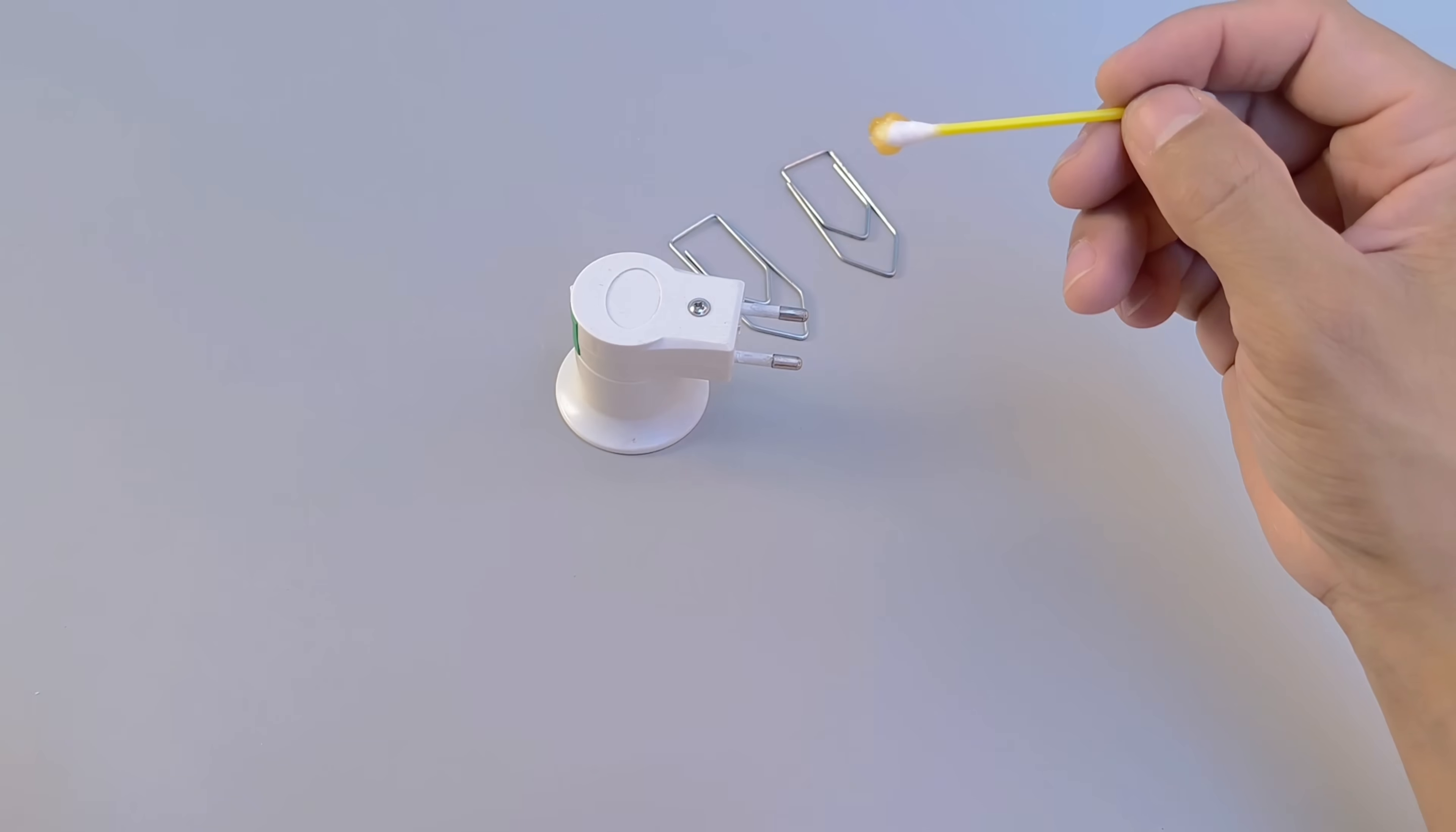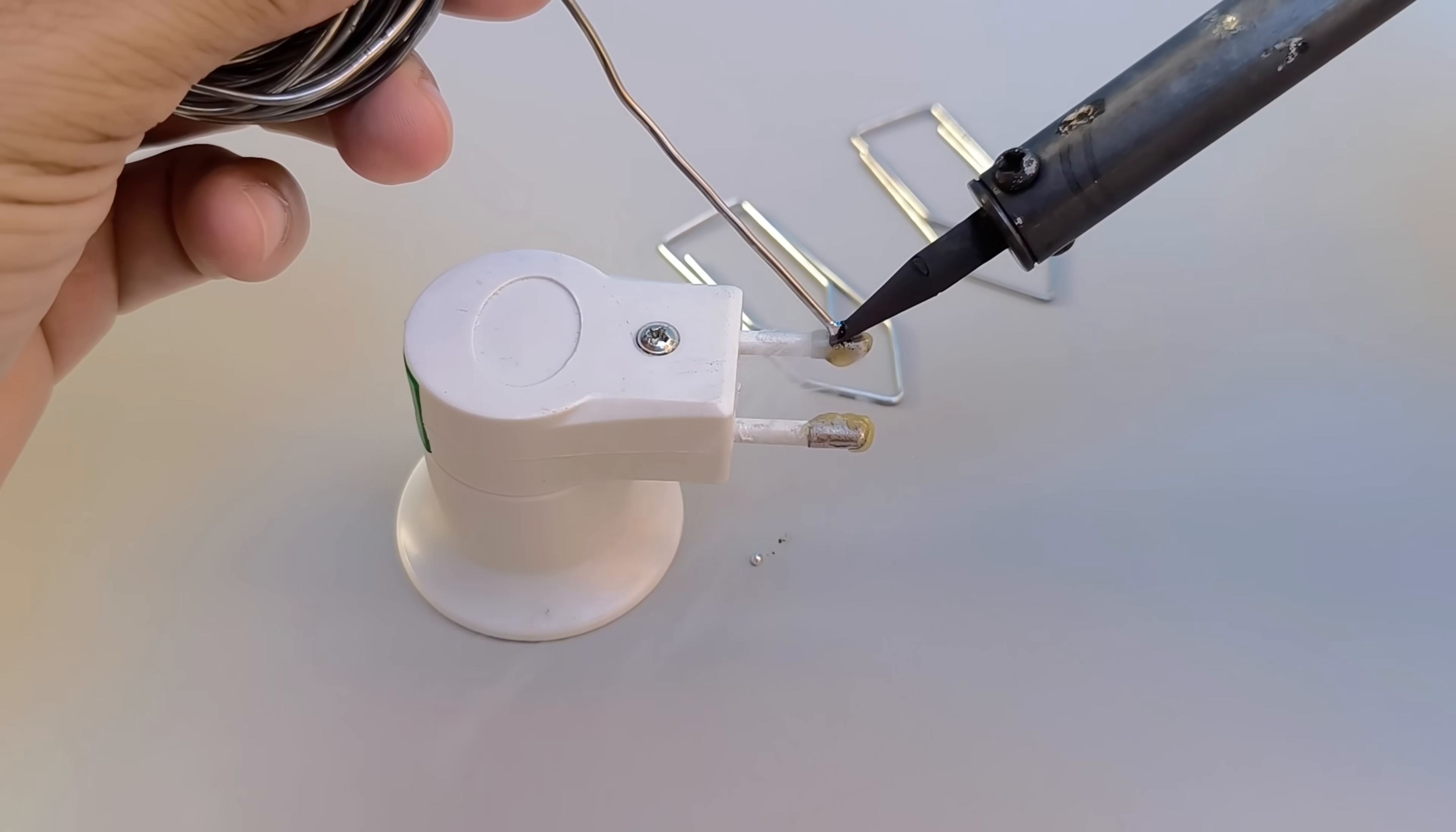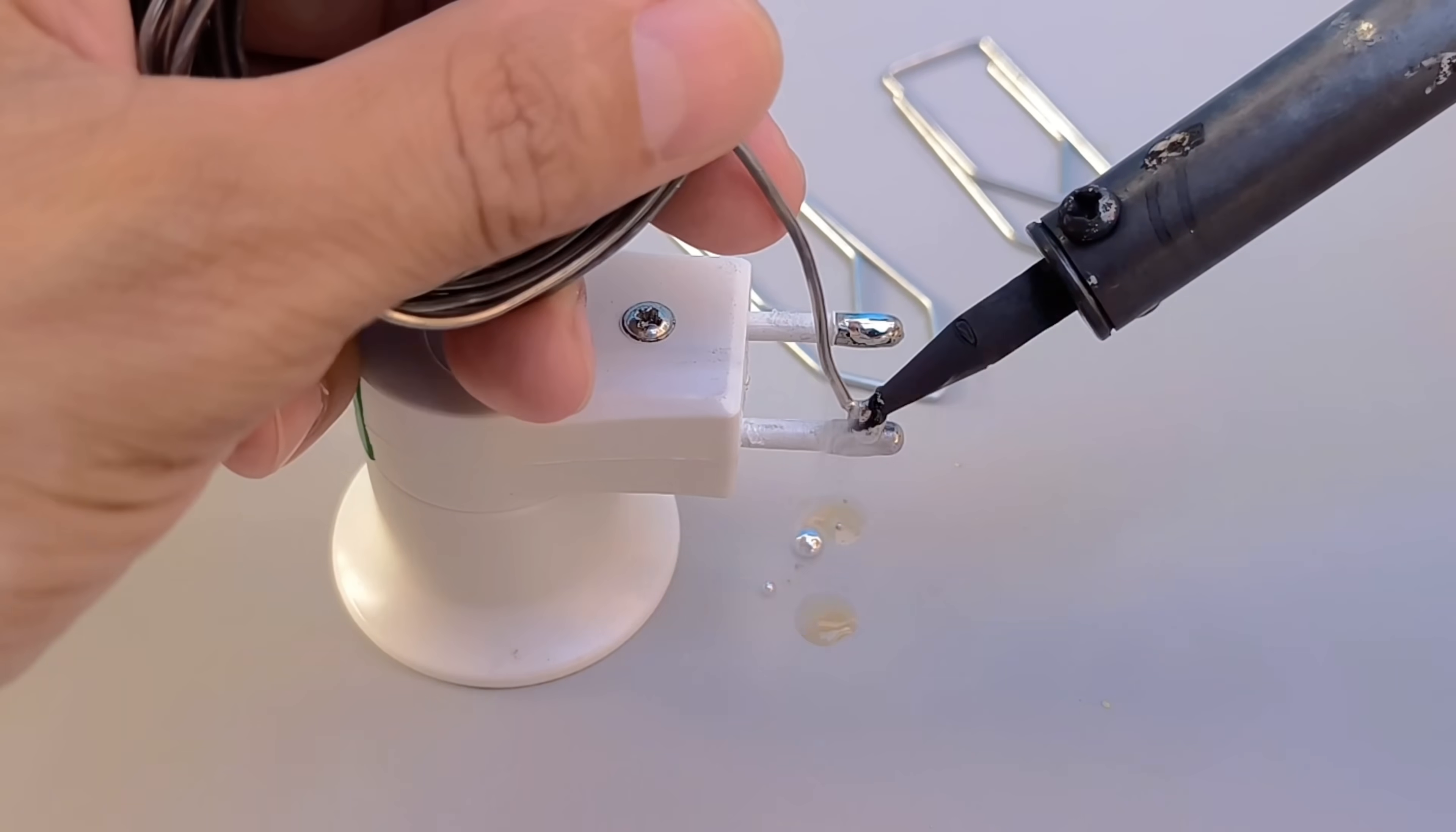To strengthen the solder joint, use solder paste. Apply a small amount to the sanded spots on the socket pins and the ends of the paper clips. With a properly heated soldering iron, make two solder points, one on each pin of the socket.